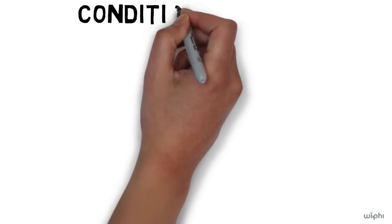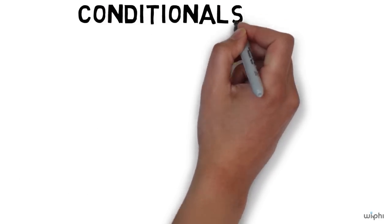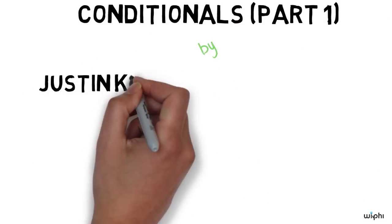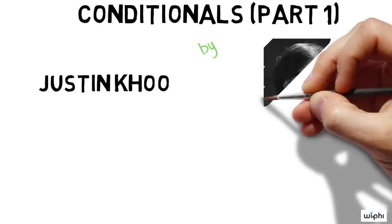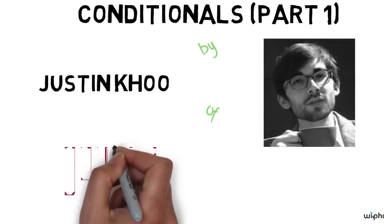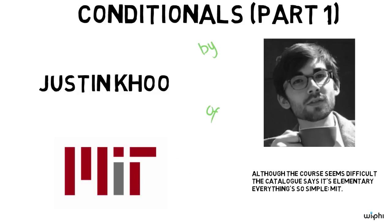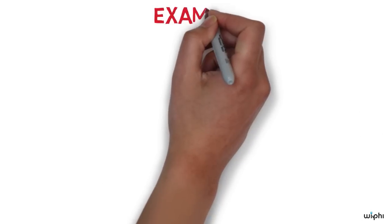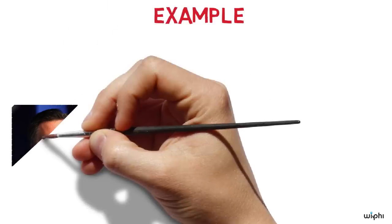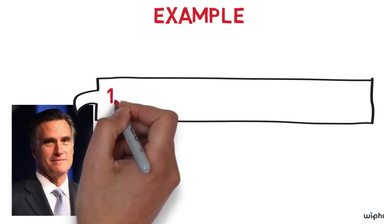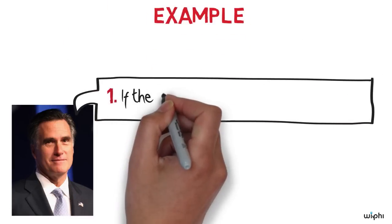My name is Justin Ku and I'm an assistant professor of philosophy at MIT. Today we are going to look at conditionals, which are a class of sentences that have puzzled philosophers for thousands of years. Here's an example of a conditional sentence from a speech by former presidential candidate Mitt Romney: 'If the safety net needs repair, I will fix it.'